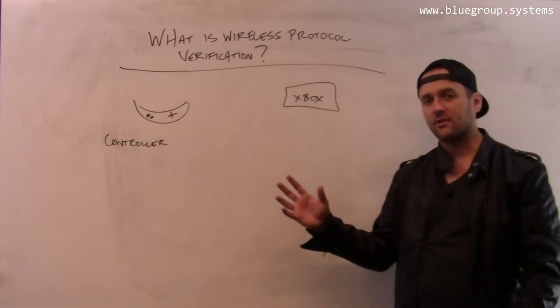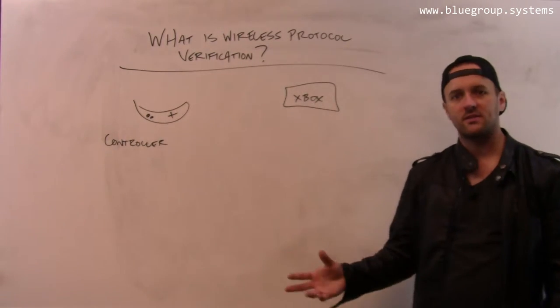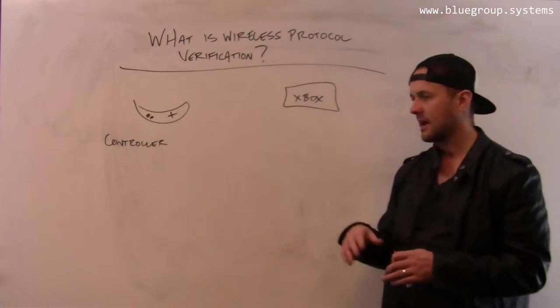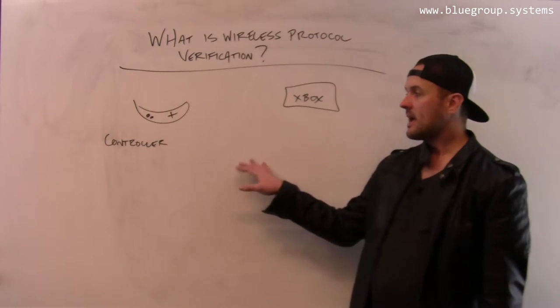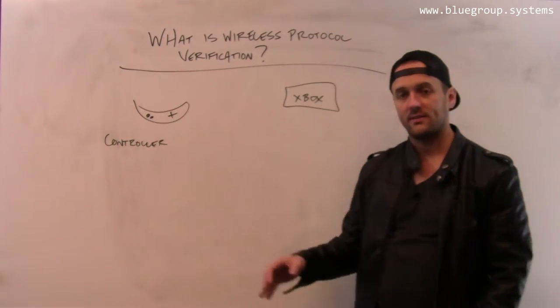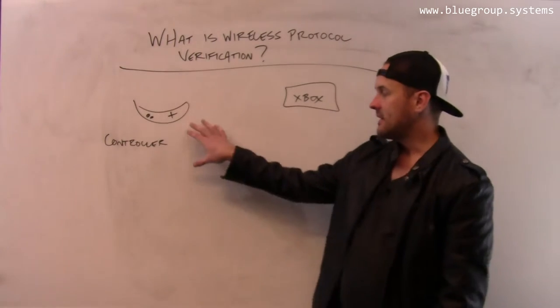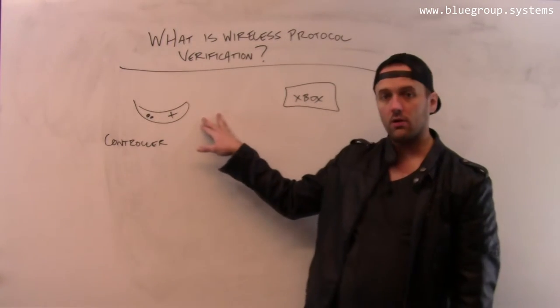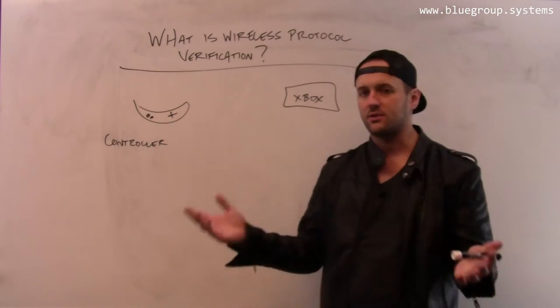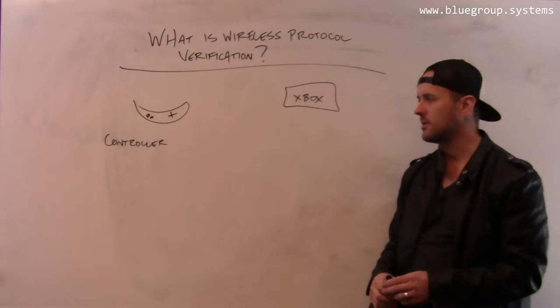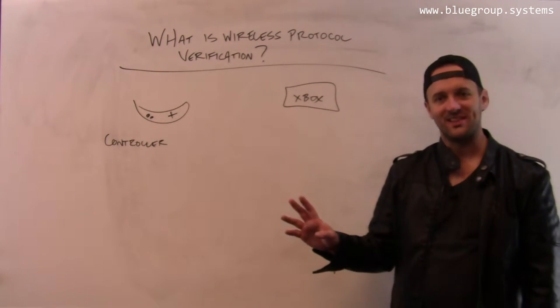So from a Microsoft context, Microsoft makes this gaming system called the Xbox, and they have gaming controllers for the Xbox. This is a great example of a proprietary wireless device. It speaks some type of protocol over the wireless medium to communicate with the Xbox to allow you to control the characters.